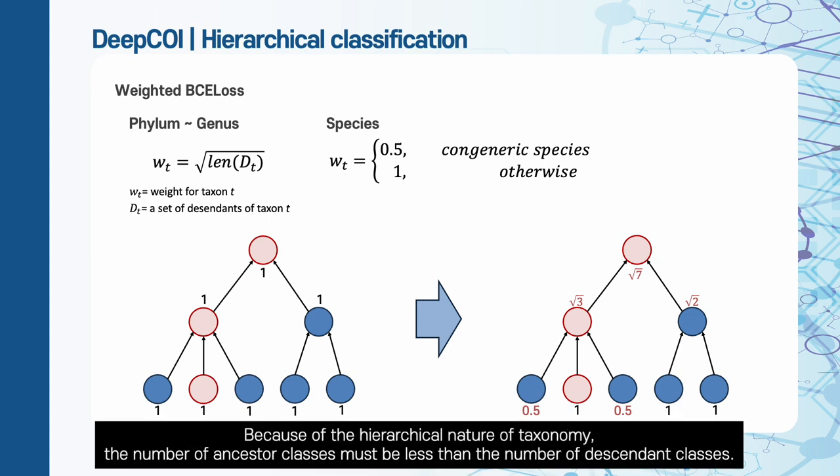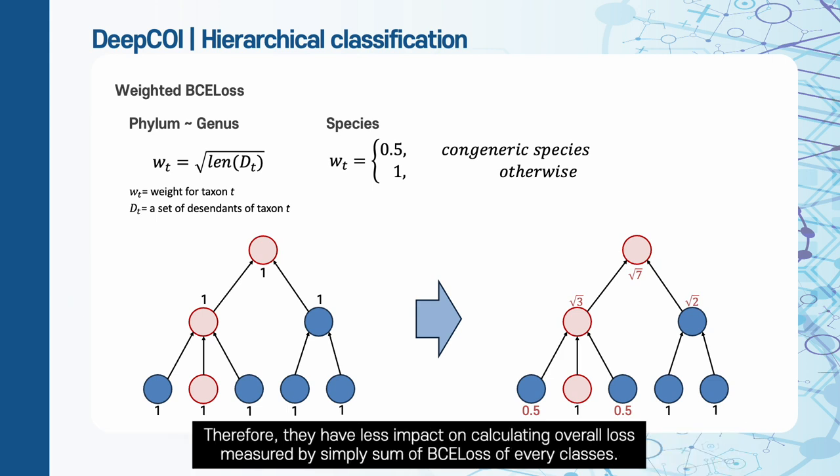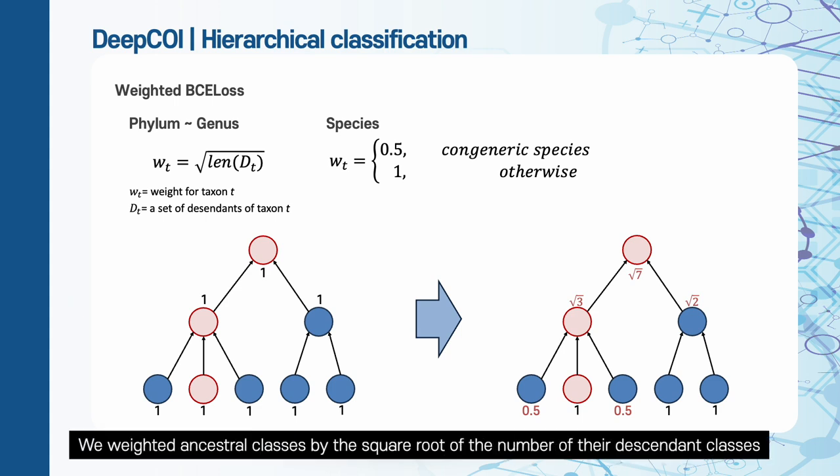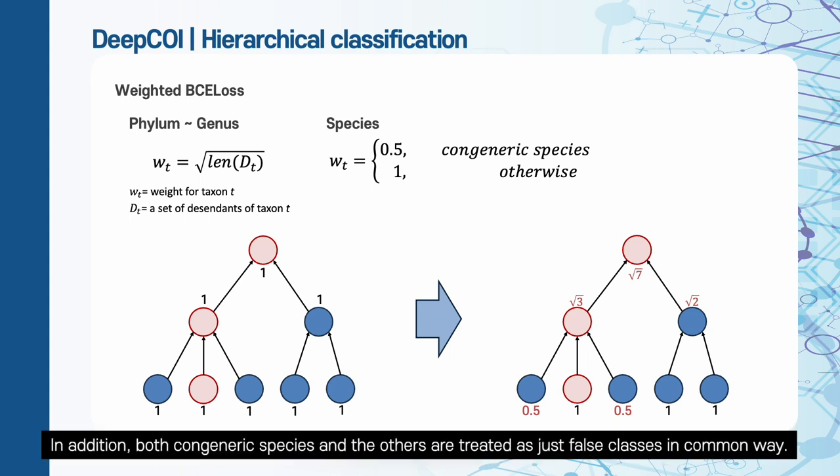Because of the hierarchical nature of taxonomy, the number of ancestor classes must be less than the number of descendant classes. Therefore, they have less impact on calculating overall loss measured by simply sum of BCE loss of every class. To handle this problem, we weighted ancestor classes by the square root of the number of their descendant classes. In addition, both congeneric species and the others are treated as just false classes in common way. Therefore, we halved the loss of conspecific species.